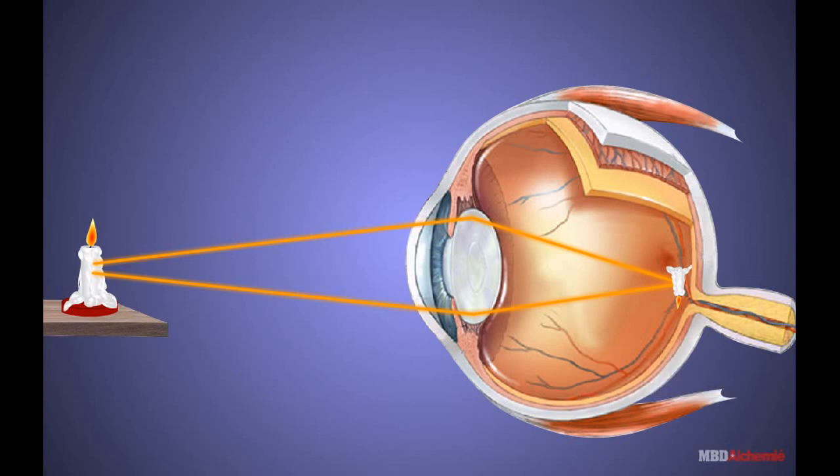The brain interprets the electrical signals and produces the sensation of vision and we see the inverted and real image of the object.